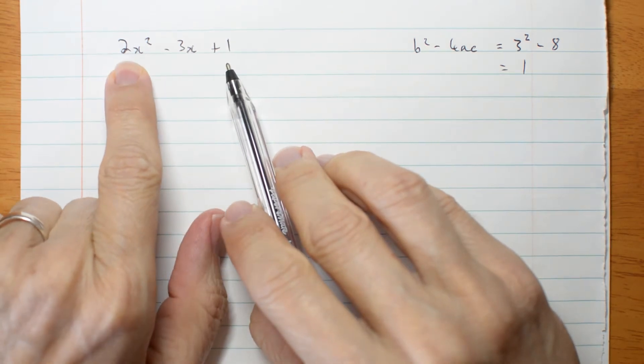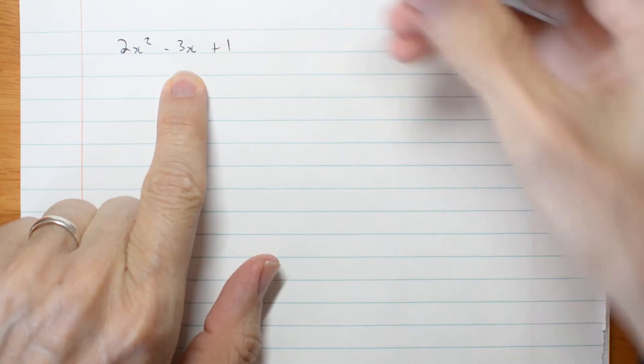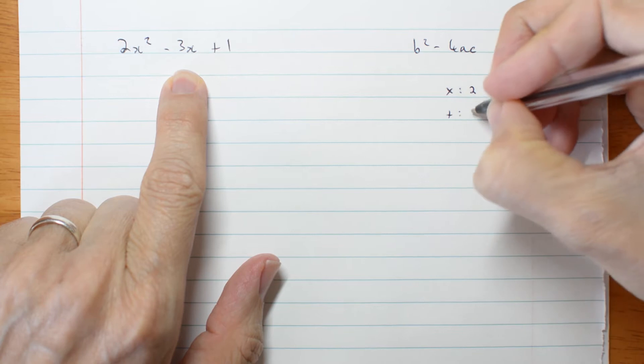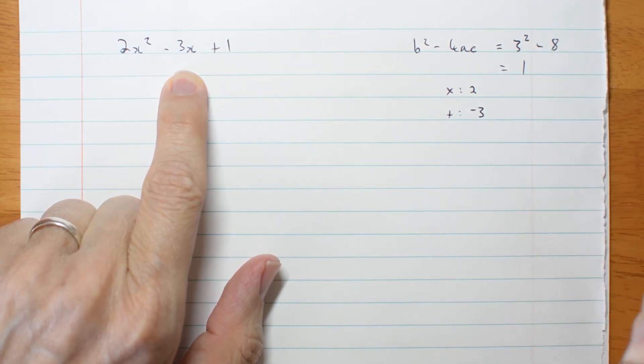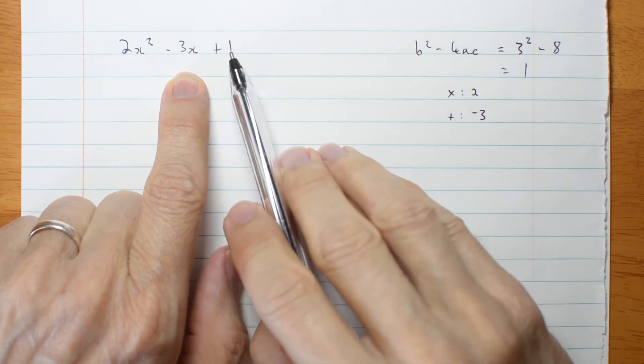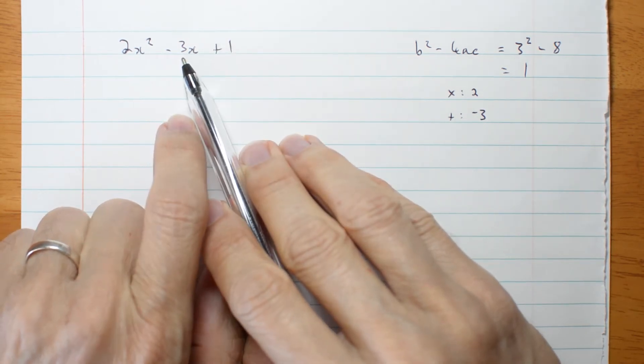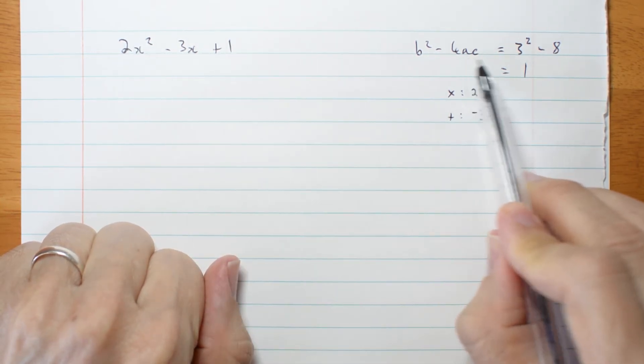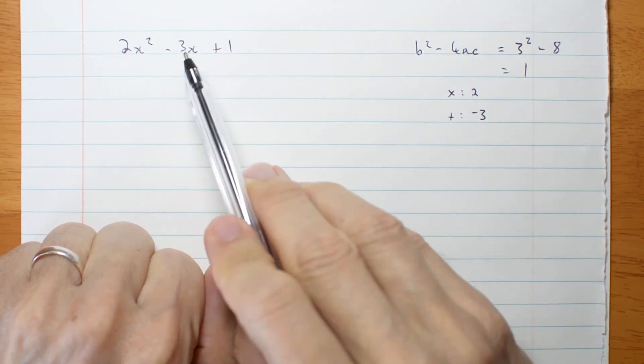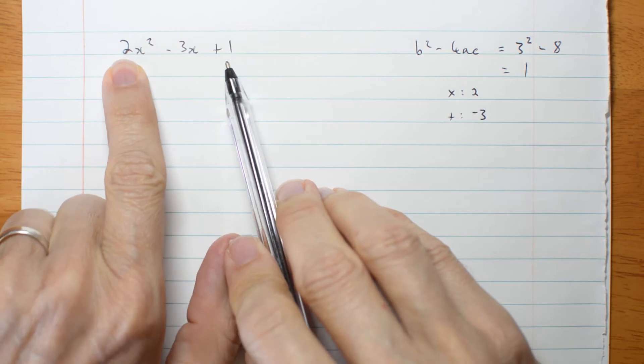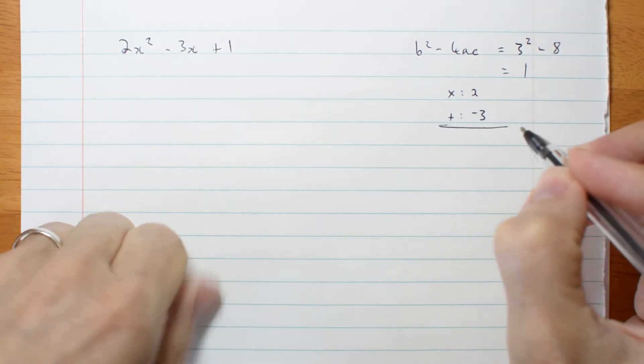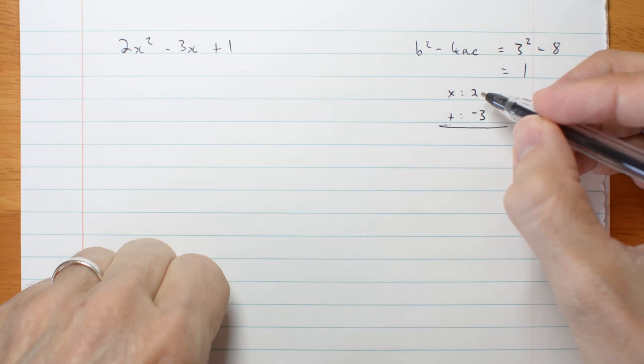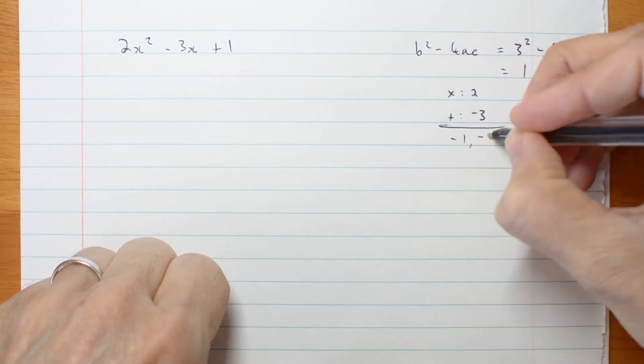I need two numbers that multiply to 2 and add to negative 3. Now it's possible that some of you may have learned to just go multiply to 1 and add to negative 3. That only works if this coefficient is 1, but here it's not. You have to include a and c. So we're going to go multiply to 2 and add to negative 3. So those numbers must be what?